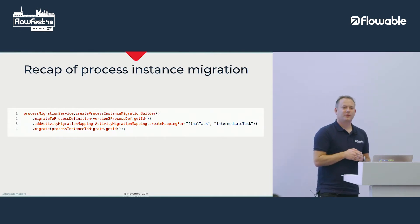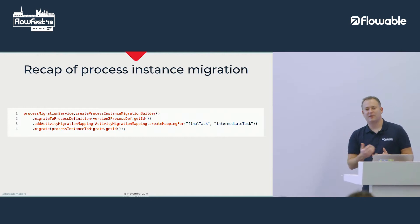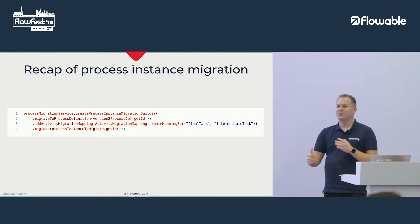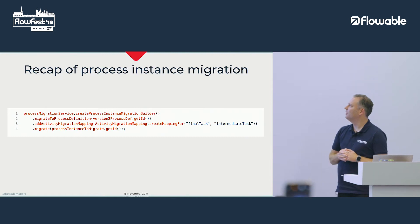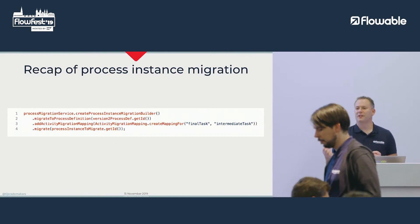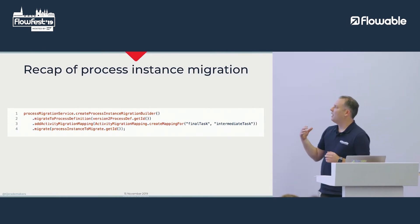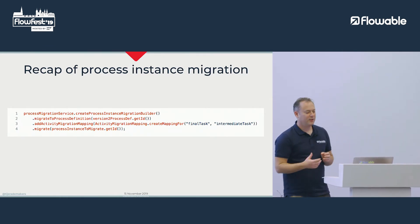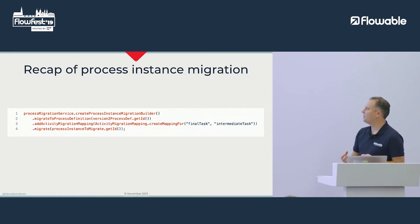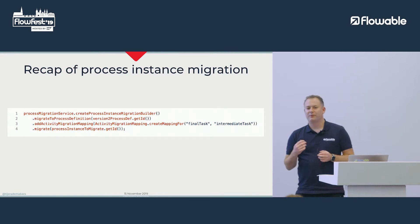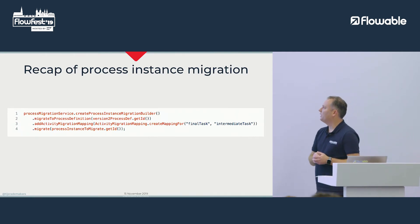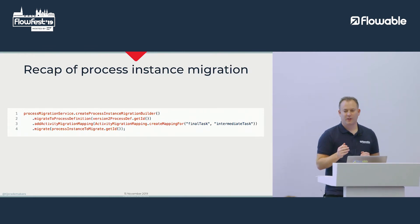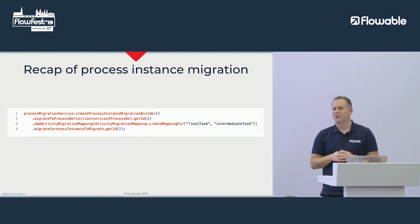There's now a process migration service. Last time we still had these methods in the runtime service, but because we added some additional methods, it's now in its own service. You can create a process instance migration builder, say I want to migrate to this process definition ID, and map from one element ID to another — from final task in v1 to intermediate task in v2 — and then just call migrate for this specific instance ID, doing the migration synchronously.